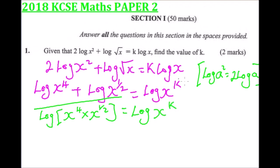We now take the antilogarithm, which is the same as canceling log from both sides. We add the exponents 4 and 1/2 because we have a common base. So x^4.5 = x^k, since we now have the same base, which is x.